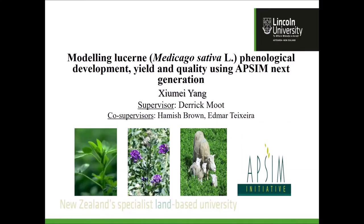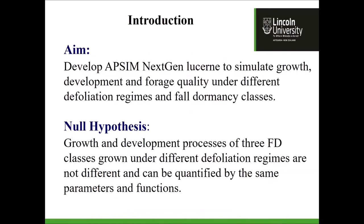Today we are talking about modeling lucerne phenological development, yield, and quality using APSIM Next Generation. This is a workshop which carried on from two years ago. The overall aim of this project is to develop an APSIM Next Generation Lucerne model to simulate growth, development, and forage quality under different defoliation regimes and fall dormancy classes. Our null hypothesis is that growth and development processes of three fall dormancy classes grown under different defoliation regimes are the same and can be quantified by the same parameters and functions.